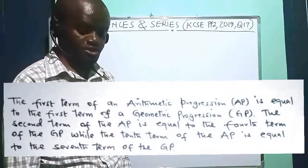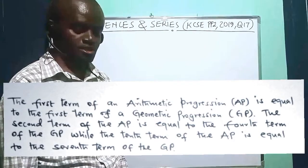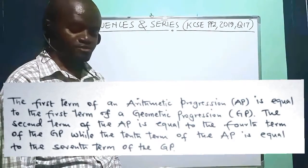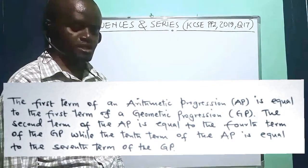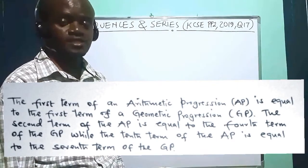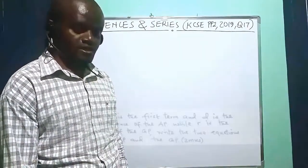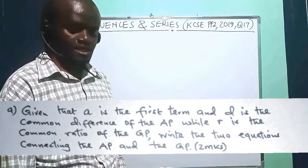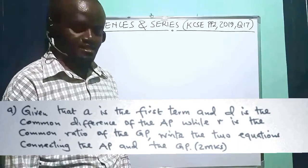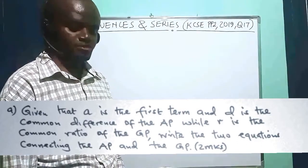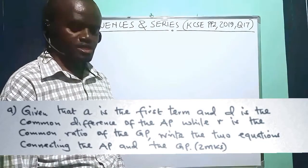The first term of an arithmetic progression is equal to the first term of a geometric progression. The second term of the AP is equal to the fourth term of the GP, while the tenth term of the AP is equal to the seventh term of the GP. Given that A is the first term and D is the common difference of the AP, while R is the common ratio of the GP, write the two equations connecting the AP and the GP.